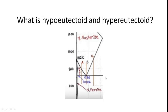One zone is on the left side of the eutectoid point and one is on the right side. The left zone, having less than 0.76 weight percentage carbon, is known as the hypo eutectoid zone, and the right zone, having more than 0.76 weight percentage carbon, is known as the hyper eutectoid zone.